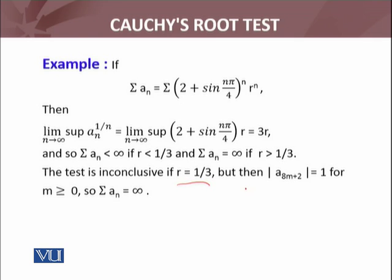But then, you can see that a_(8m+2) in absolute value will be 1 for m greater than or equals to 0. So summation a_n will be divergent. The test was inconclusive, but we used a further trick to decide that if r equals 1 by 3, the series will be divergent.